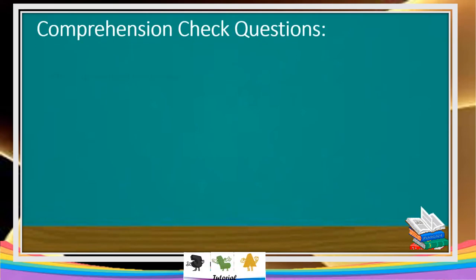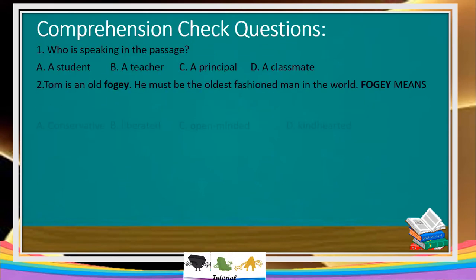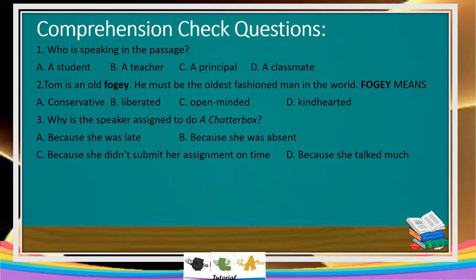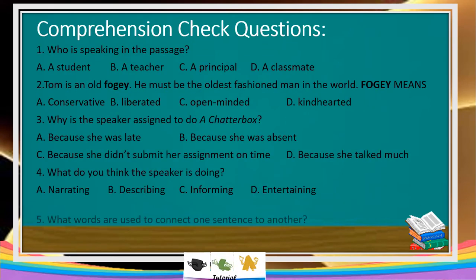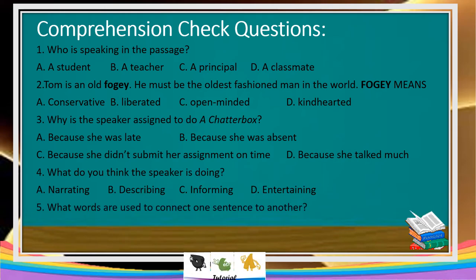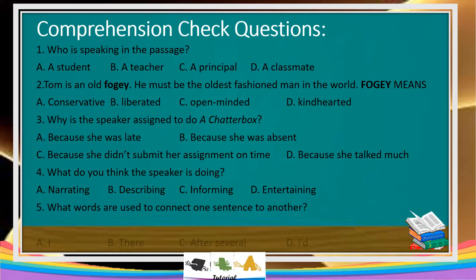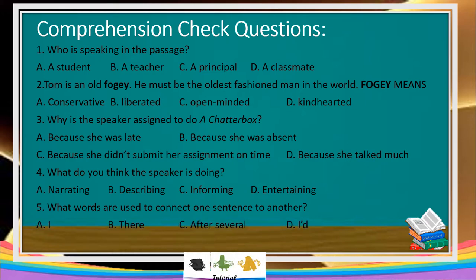Comprehension check questions. Number 1: Who is speaking in the passage? A — student, B — teacher, C — principal, D — classmate. What do you think is the answer? The answer is Letter A.